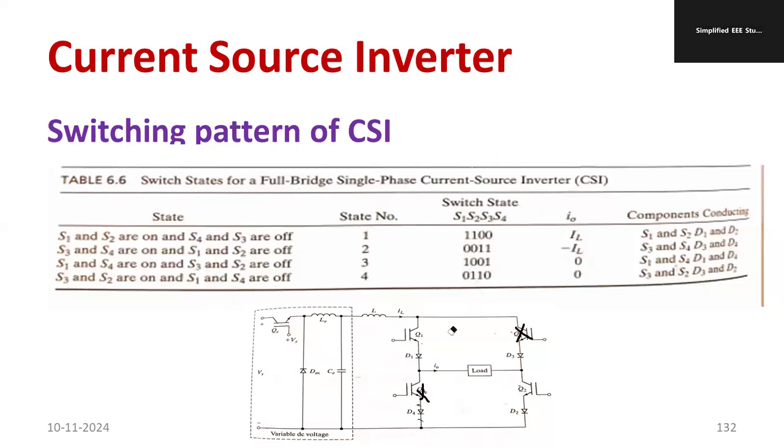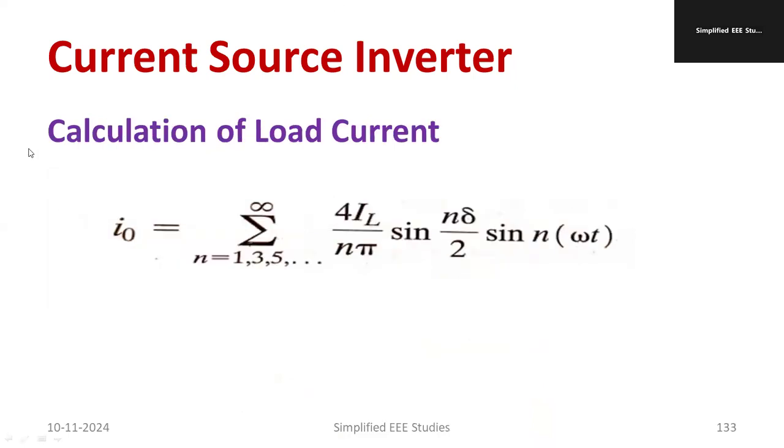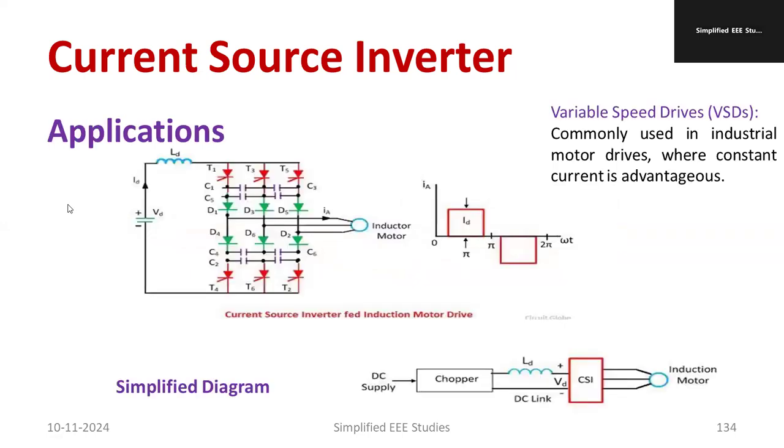This is regarding the operation of full bridge CSI, current source inverter. Remember the state and you can check the operation and verify it. You can calculate the load current using the formula. IL stands for load current, delta stands for load angle. You can determine harmonics using this equation.